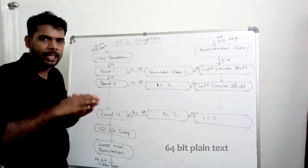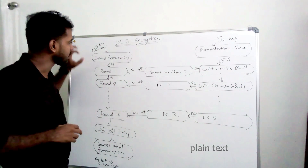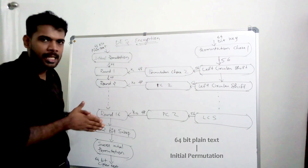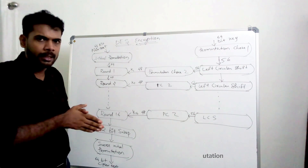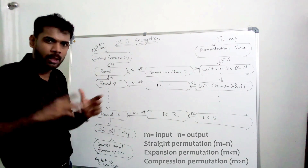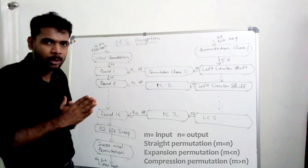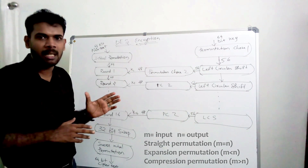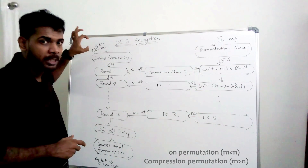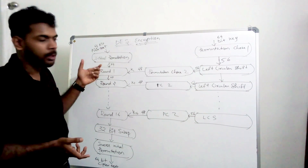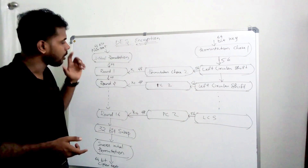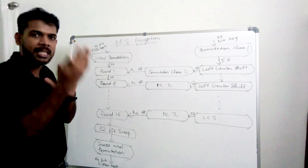This is a data block — a 64-bit plaintext. This 64-bit plaintext will go through the initial permutation. There are three types of permutations: straight permutation, expansion permutation, and compression permutation. The initial permutation here is a straight permutation.